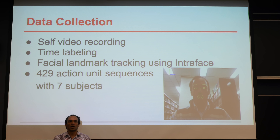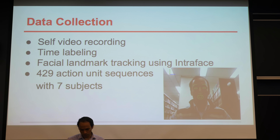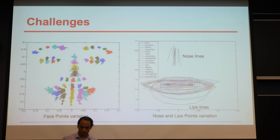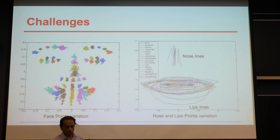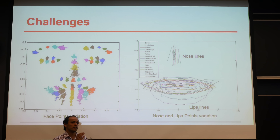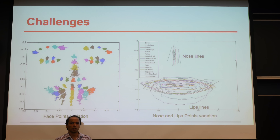For data collection, we collected our own data — basically 429 action unit sequences with around seven subjects. The challenges are that it's not very clean data, and there's a lot of variation. On the left side you see facial points for just one video and one subject. On the right side it's just for the mouth-based action units, for lips and nose. So there's a lot of variation and challenges.